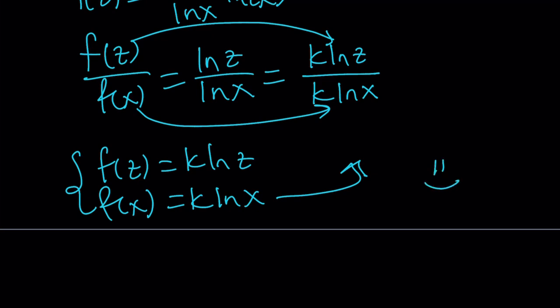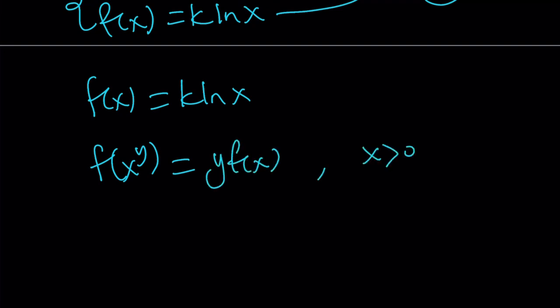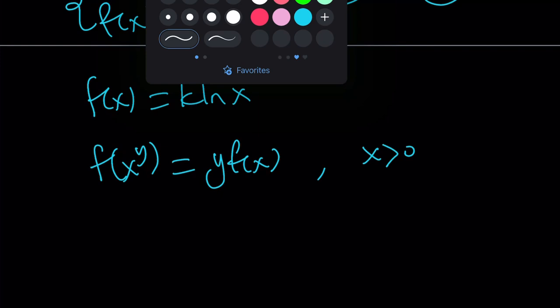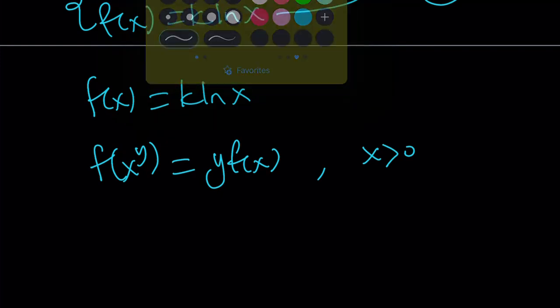Now, let's go ahead and do the following. We got f of x equals k ln x for the solution to this problem: f of x to the y equals y times f of x, where x is positive and f is continuous. So let's go ahead and plug it in to check our work. You don't have to do it, but it's just, you know, fun. Let's give it a try.